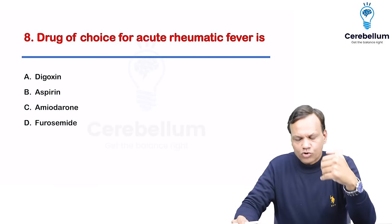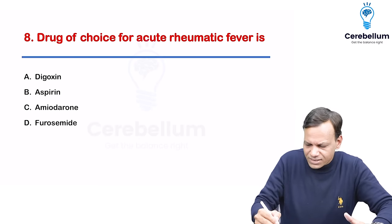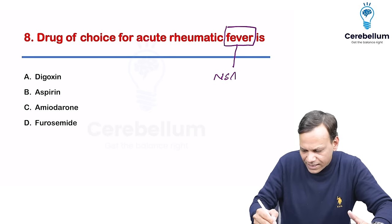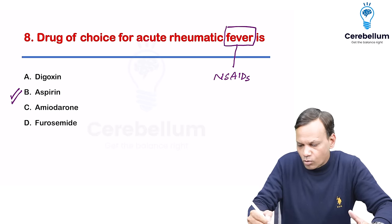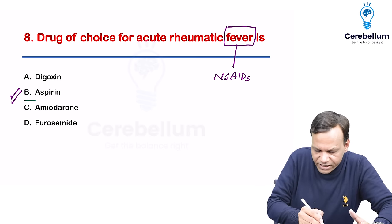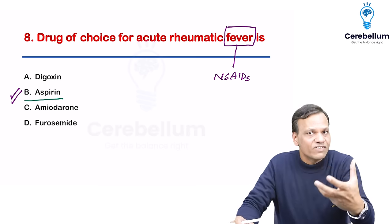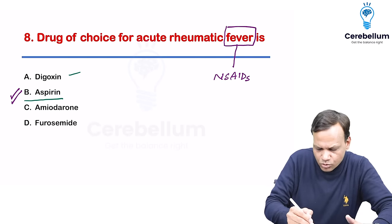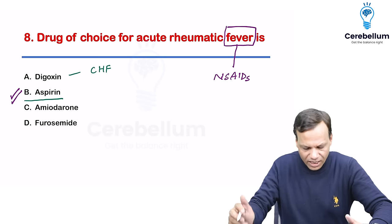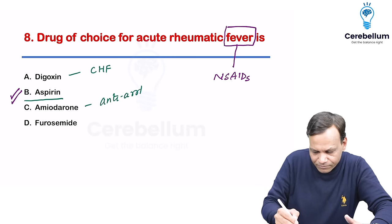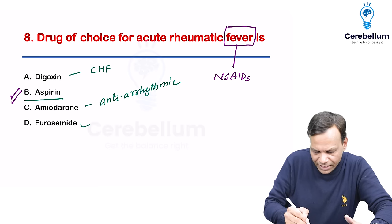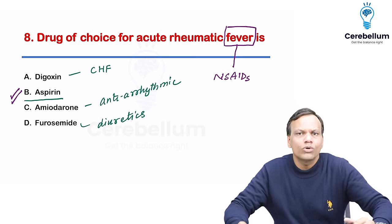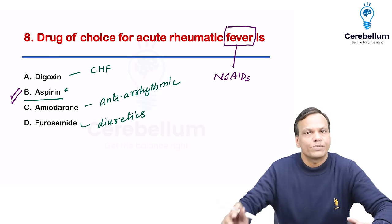Drug of choice for acute rheumatic fever: aspirin (an NSAID) is the drug of choice. It treats fever and also decreases other inflammatory manifestations like carditis. Digoxin is for congestive heart failure, amiodarone is anti-arrhythmic, and furosemide is a diuretic for edema — none are used in acute rheumatic fever. The answer is aspirin.